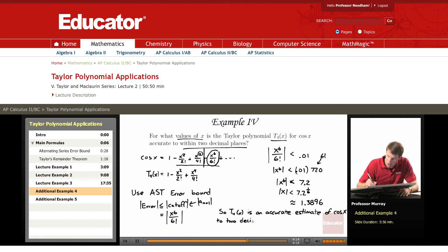estimate of cosine x to two decimal places. In other words, the error will be at most .01. As long as you stick to values of x that are inside this range.